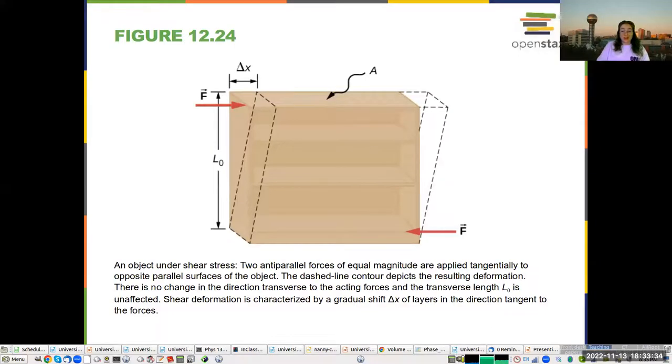And then you also can have shear stress, which is when things tend to bend left and right. So if you have two forces in opposite directions or anti-parallel, then they're going to deform, the object is going to shear. And shear deformation is characterized by a shift in the layers tangential to the forces, in the direction that is tangent to the forces.